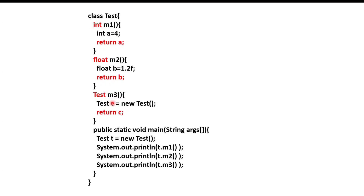The return type of this m3 method is Test class type, so this m3 method will return a Test class object. And since Test class is our current class, this m3 method will return the current class instance. So instead of returning the current class instance from the method, we can return the `this` keyword — and that is what we are going to discuss in this video.